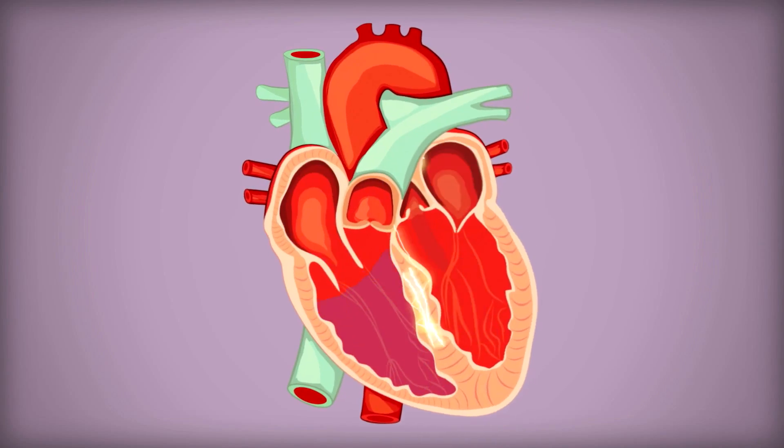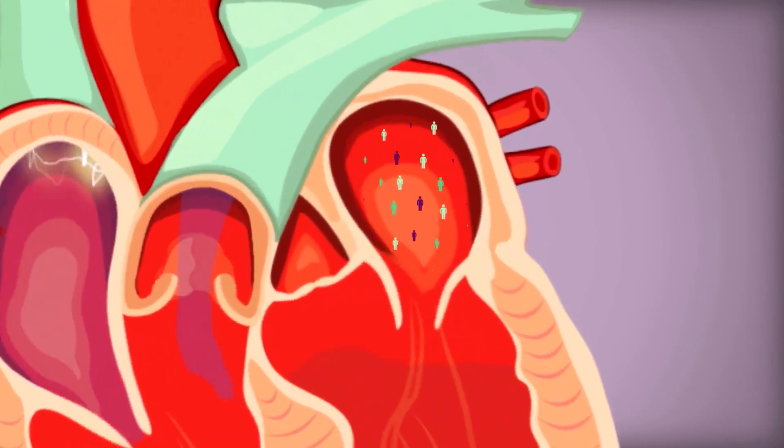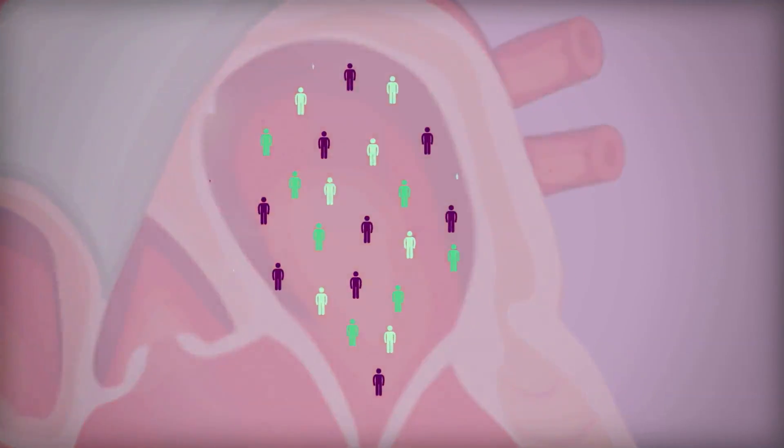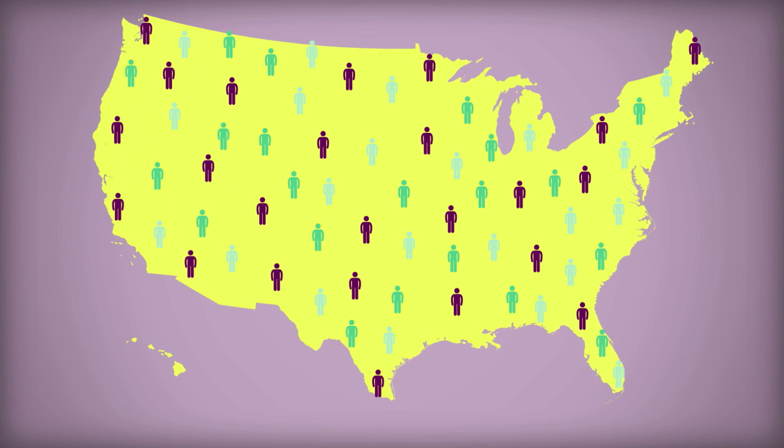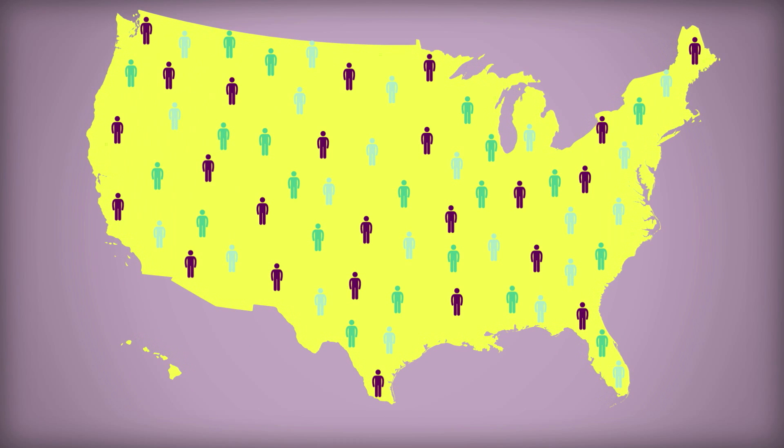If you have been diagnosed with AFib, you are not alone. AFib is the most common type of irregular heartbeat and an estimated 2.7 to 6.1 million Americans are living with AFib.